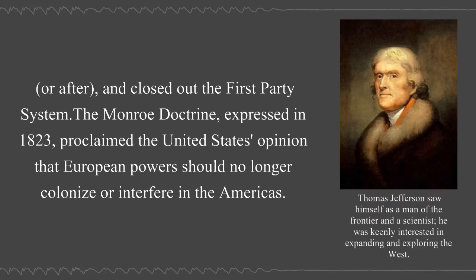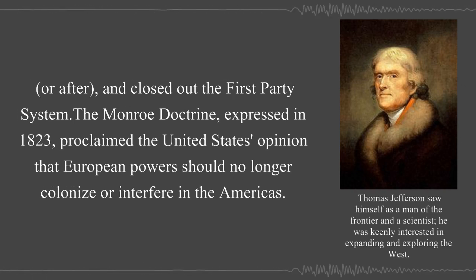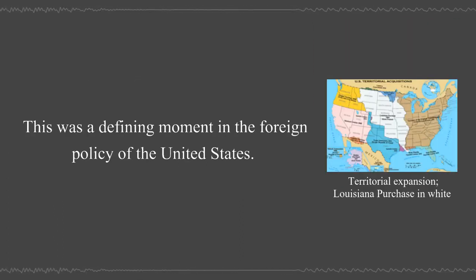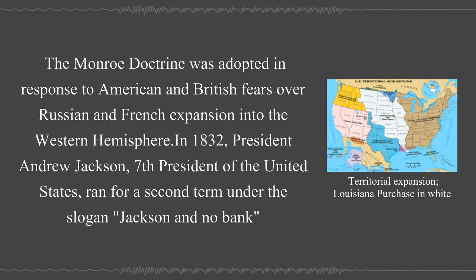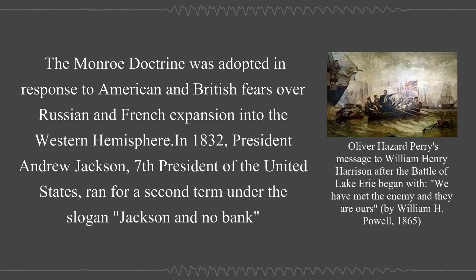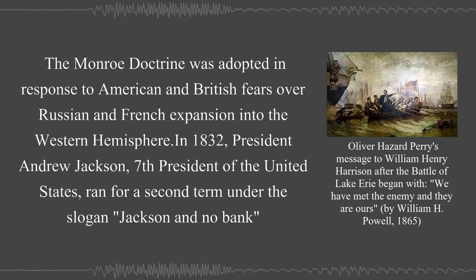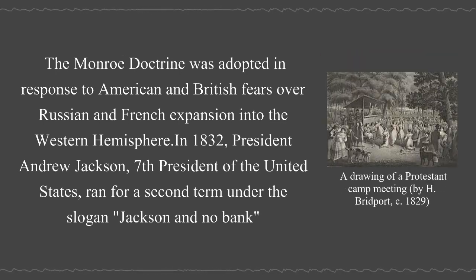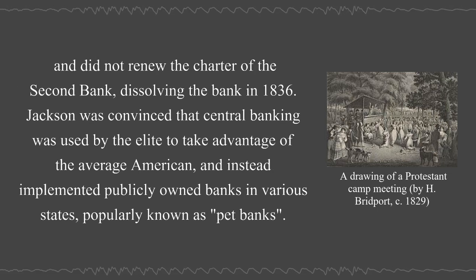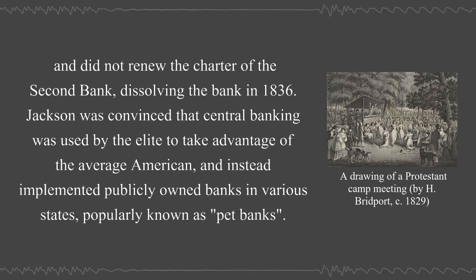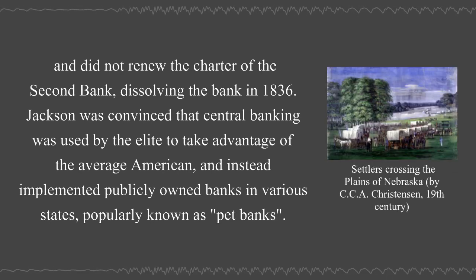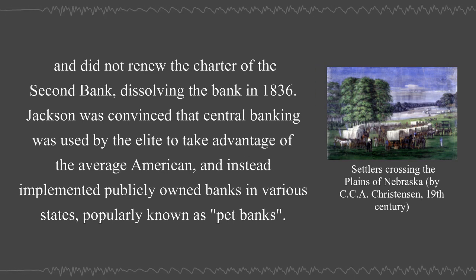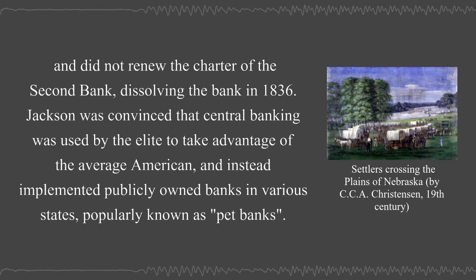The Monroe Doctrine, expressed in 1823, proclaimed the United States' opinion that European powers should no longer colonize or interfere in the Americas. This was a defining moment in the foreign policy of the United States. The Monroe Doctrine was adopted in response to American and British fears over Russian and French expansion into the Western Hemisphere. In 1832, President Andrew Jackson, 7th President of the United States, ran for a second term under the slogan 'Jackson and no bank,' and did not renew the charter of the Second Bank, dissolving the bank in 1836. Jackson was convinced that central banking was used by the elite to take advantage of the average American and instead implemented publicly owned banks in various states, popularly known as pet banks.